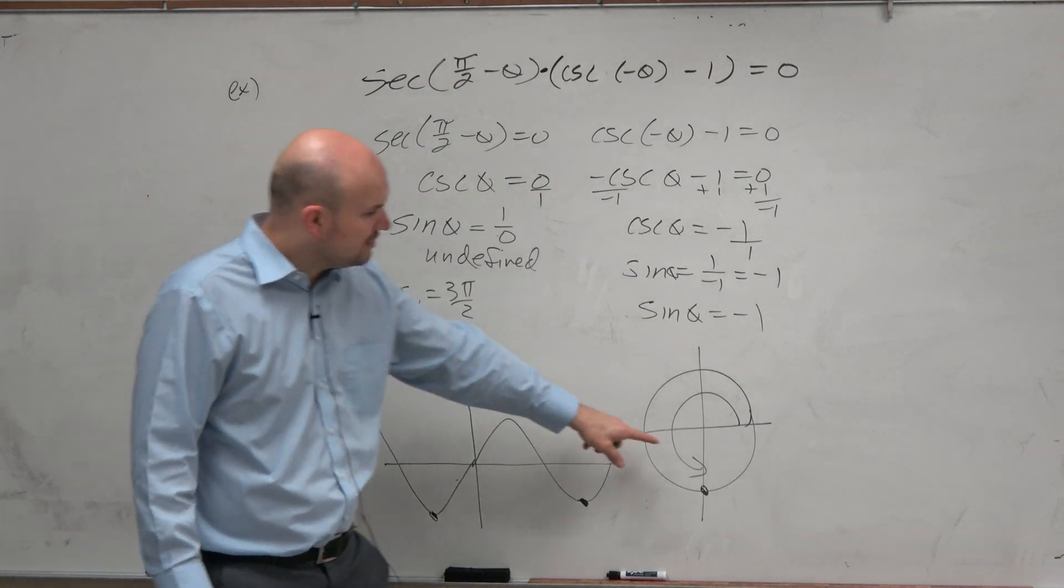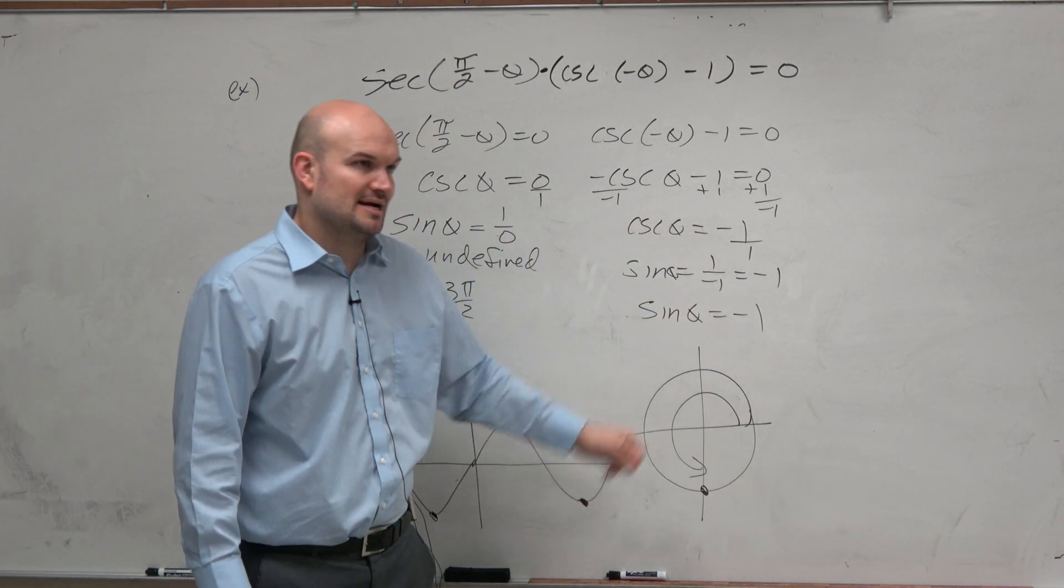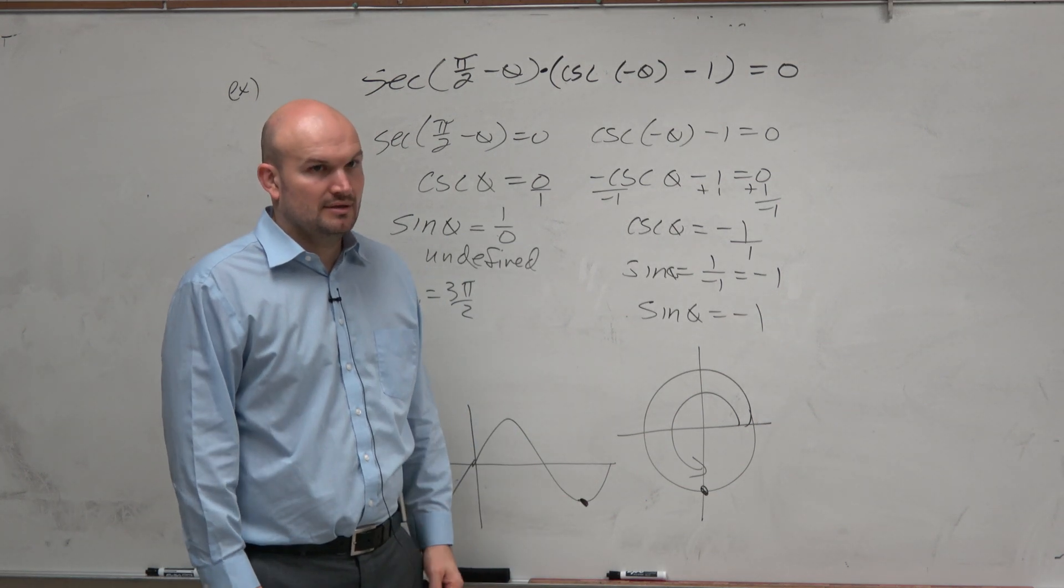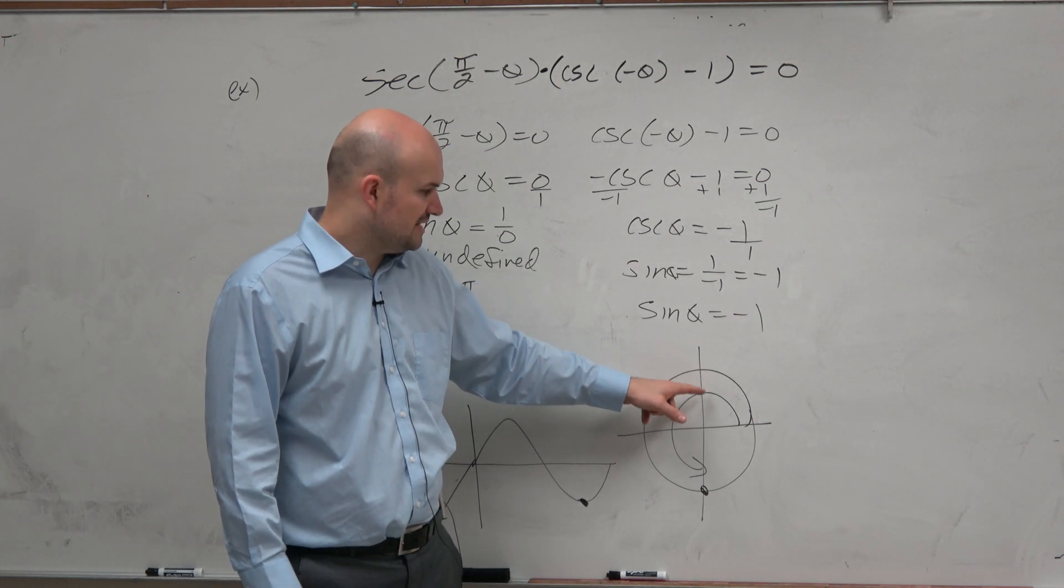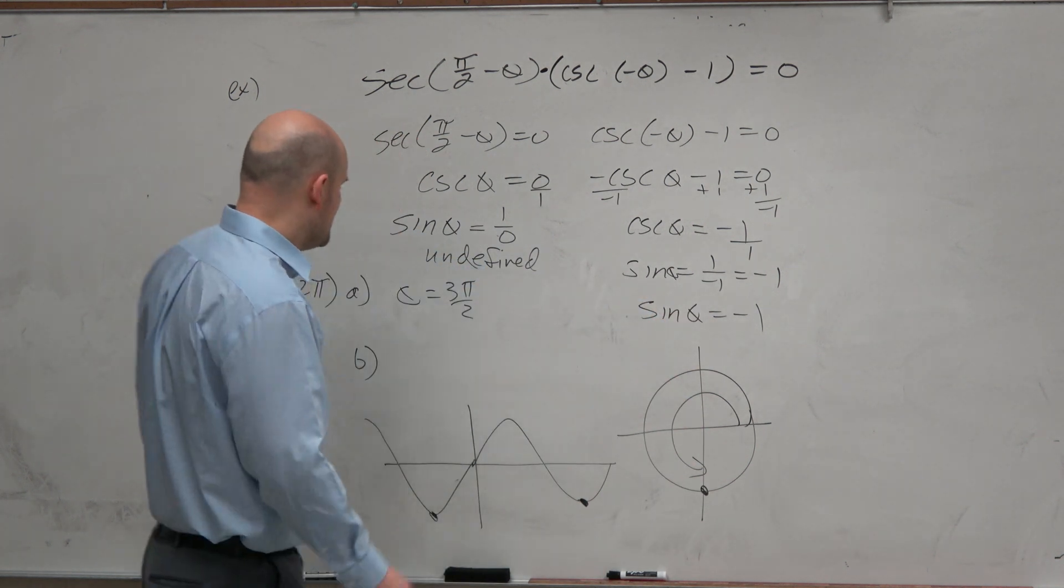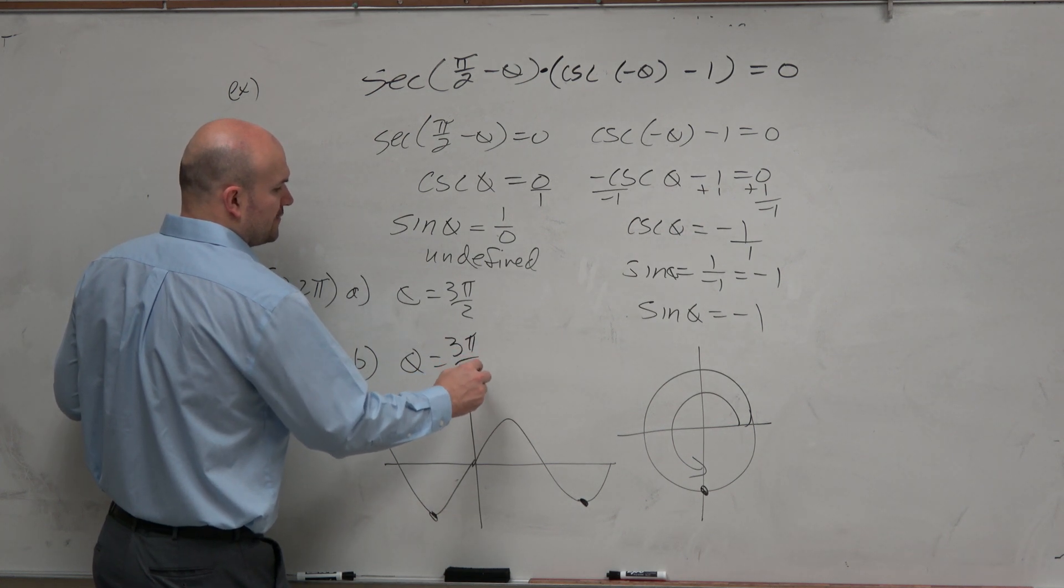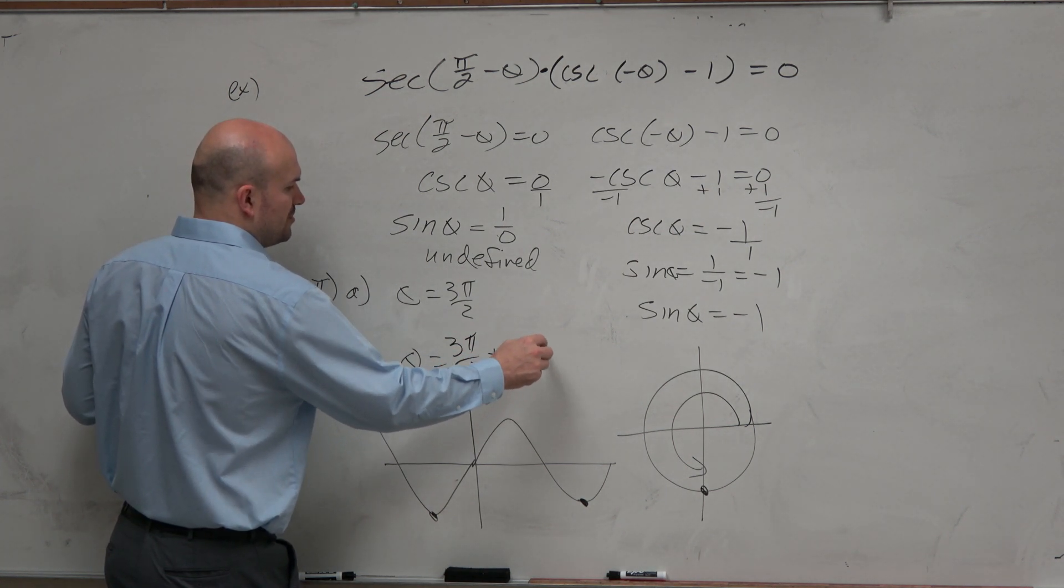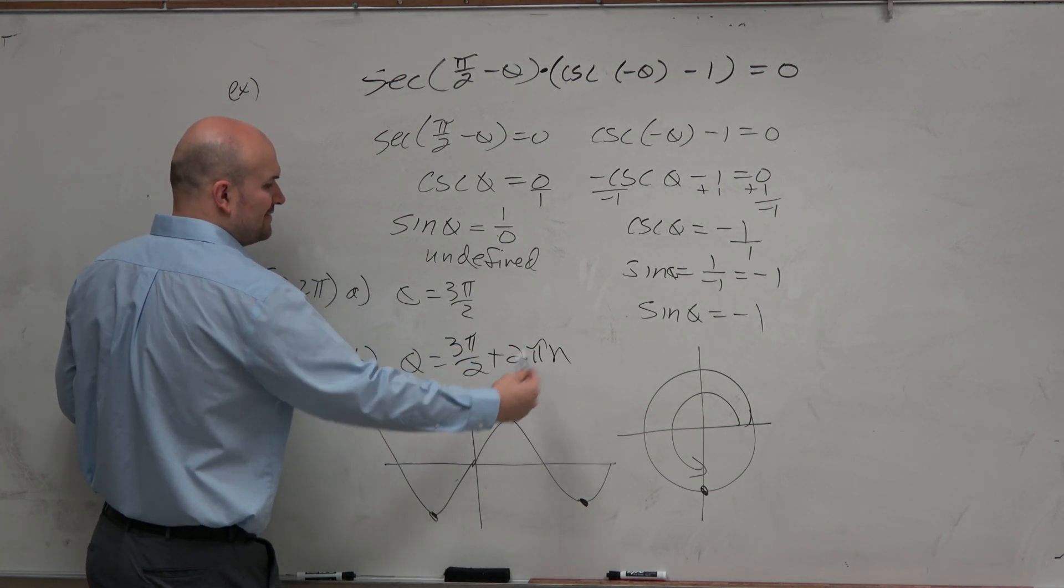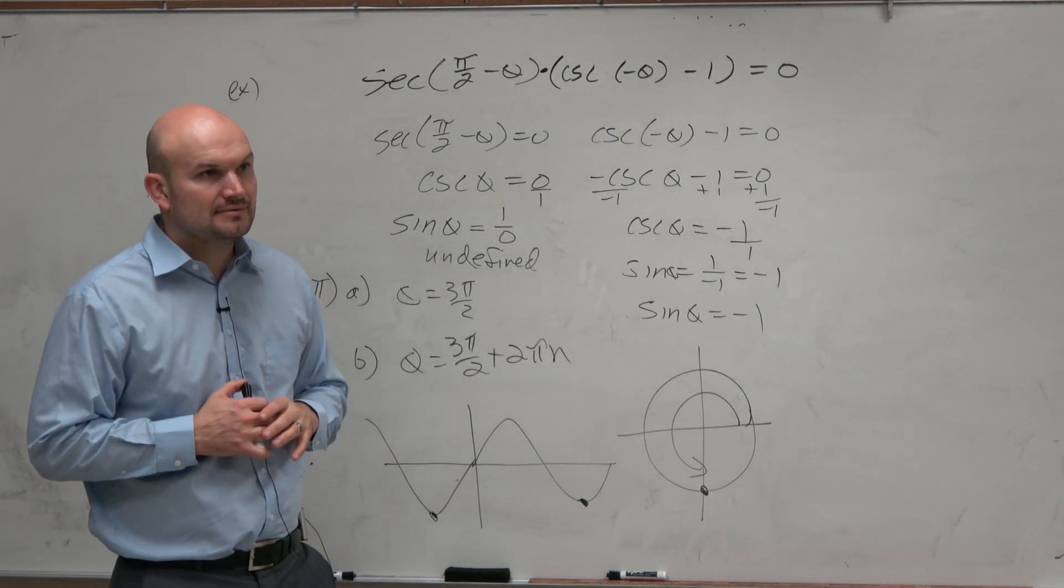And again, that makes sense on the unit circle. If you add or subtract 2 pi, you're always going to come back to the same solution. You don't want to add pi to it. That doesn't give you a solution. You don't add pi halves or anything else. So to find all the solutions, it'd be theta equals 3 pi over 2 plus 2 pi n, because there's infinite number of revolutions that we could add to get our solution.